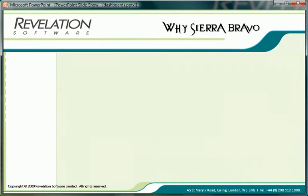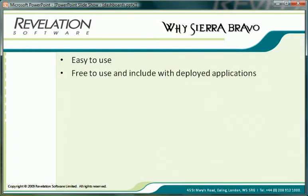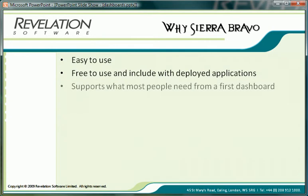So why have Revelation decided to include Bravo's dashboard in OpenInsight version 9? Quite simply because it is extremely easy to use — for instance, a graph widget can be created in as little as 30 or so lines of code — and also because it is free to license, enabling OpenInsight developers to easily include it with their solutions. In addition, the Bravo dashboard has a good reputation within the multi-value marketplace and supports what most people need for their first steps into using dashboard technology.